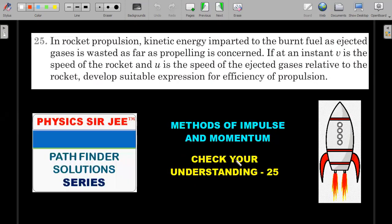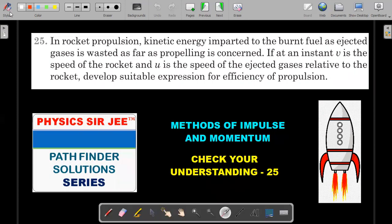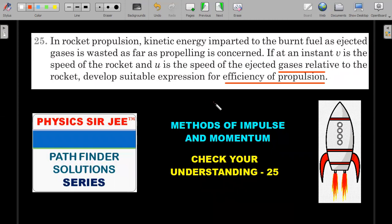Let's move to the second one. This is more interesting. Don't leave midway because I'm going to give you a practice problem at the end on a variable mass system. In rocket propulsion, the kinetic energy imparted to the burnt fuel as ejected gases is wasted as far as propelling is concerned. If at an instant v is the speed of the rocket and u is the speed of ejected gases relative to the rocket, develop a suitable expression for efficiency of propulsion. He's talking about two important things: u is the exhaust speed with respect to the rocket, and kinetic energy imparted to burnt fuel is considered waste. He's talking about efficiency of propulsion.